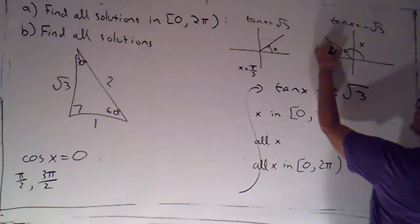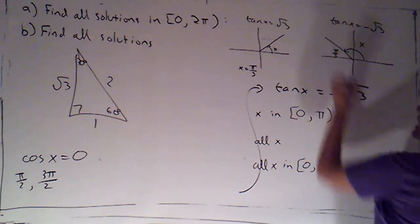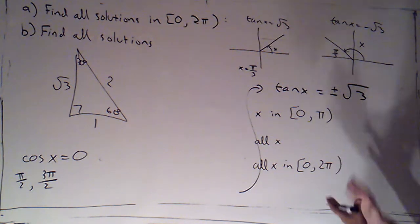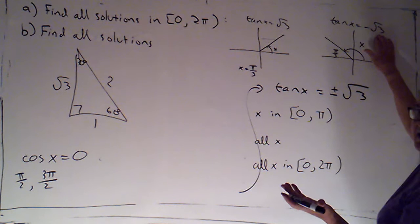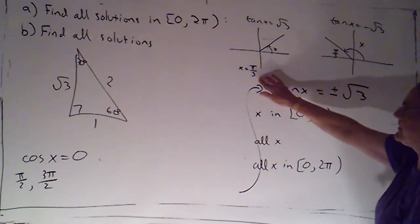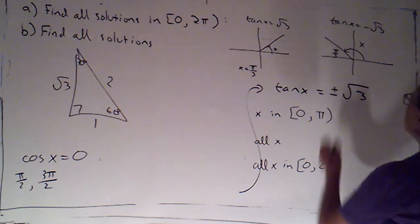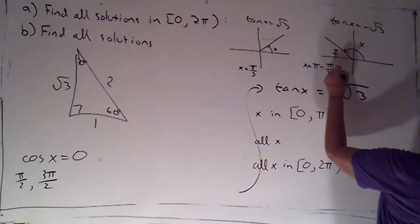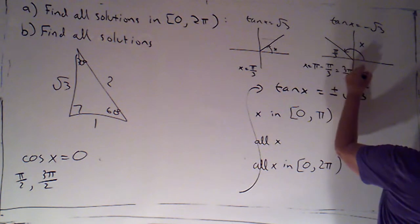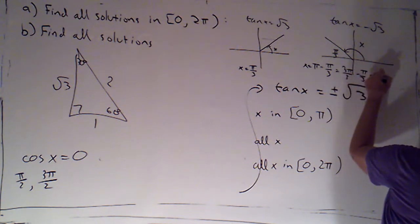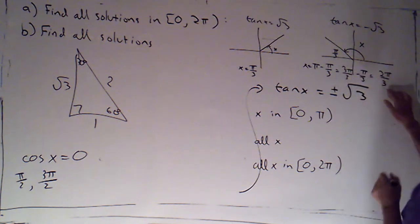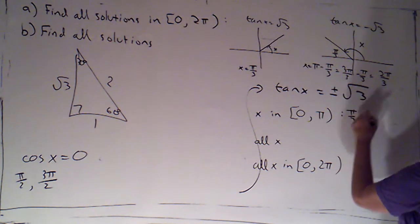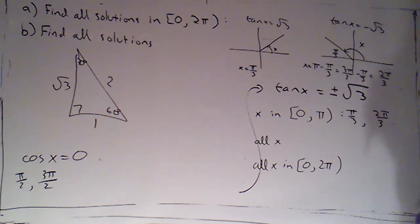Here, my reference angle would have to be pi over 3, because it's the acute angle whose tangent is root 3, the absolute value of this. And we just figured out that was pi over 3. So, here, x would be pi minus pi over 3. So, that's 3 pi over 3 minus pi over 3. That's going to give me 2 pi over 3.